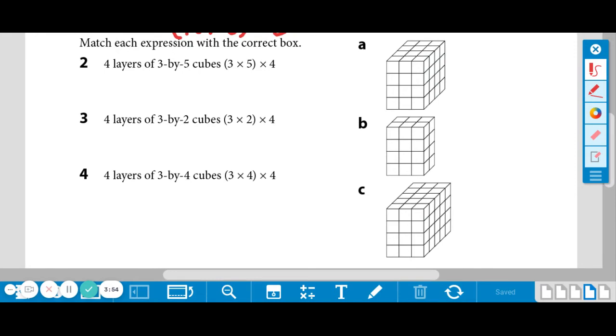So 3 times 5 or 3 by 5. If you look at A has 1, 2, 3 by 1, 2, 3, 4. That will not work for number two. Let's label that. So 3, 1, 2, 3, 4.